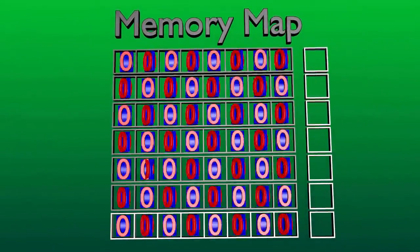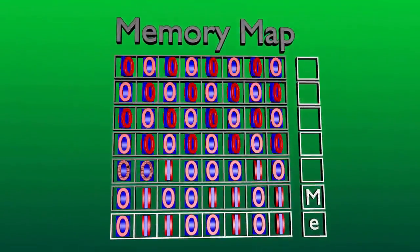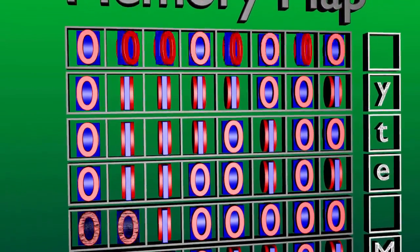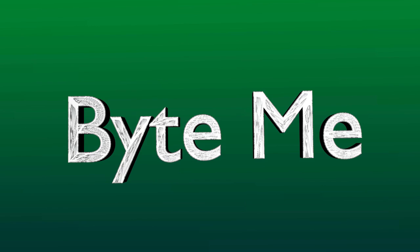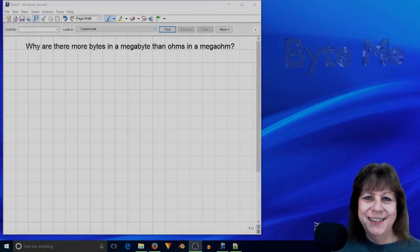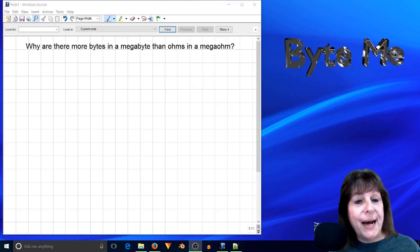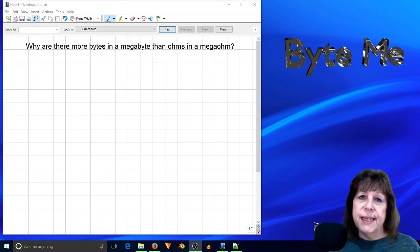Here is a potentiometer that's got kilo-ohms in it, kilo being a thousand ohms. But here is a memory chip that has kilobytes in it, that have one thousand and twenty-four bytes in a kilobyte. Why are there more bytes in a kilobyte than there are ohms in a kilo-ohm? Why are there more bytes in a megabyte than there are ohms in a megaohm?